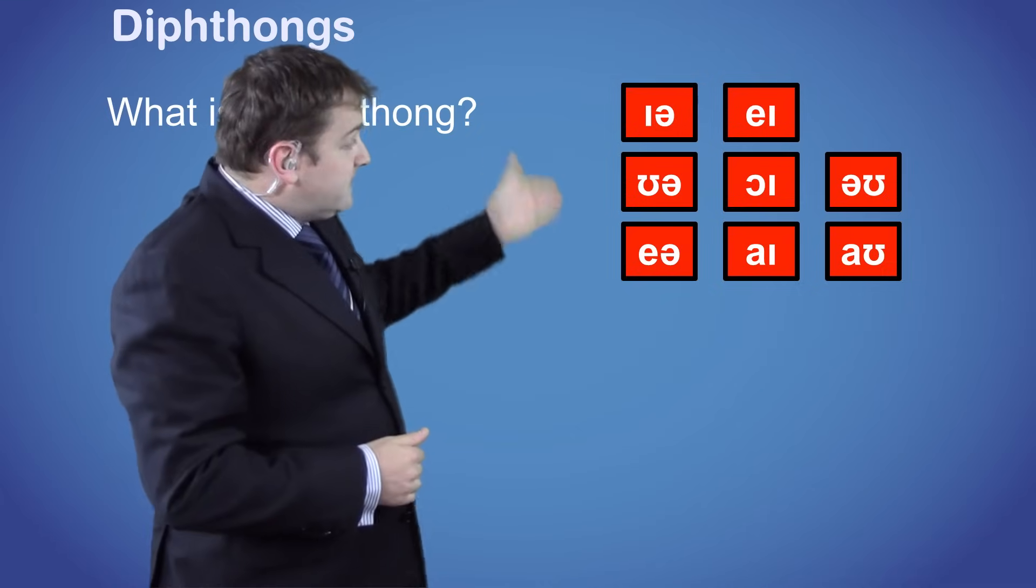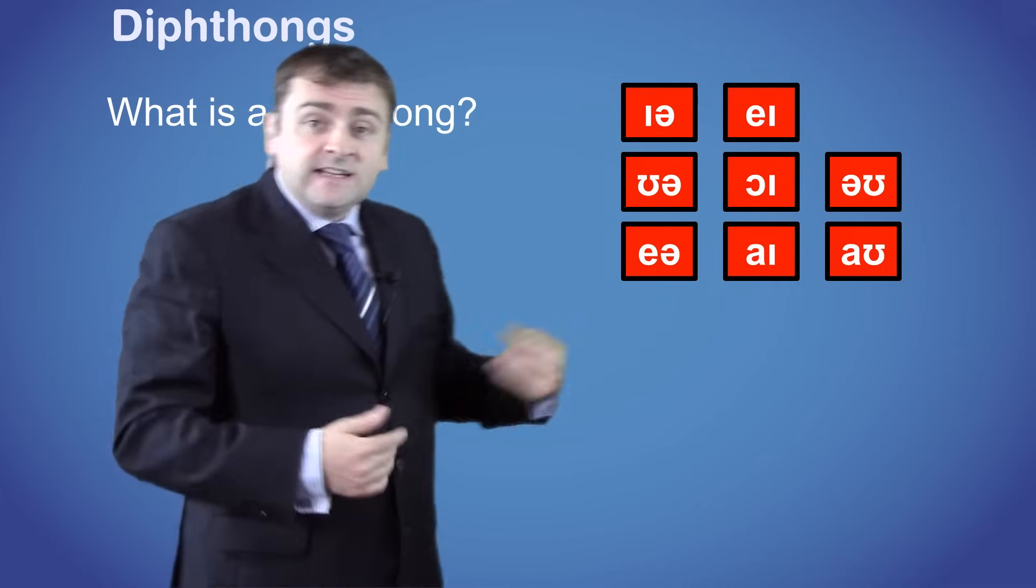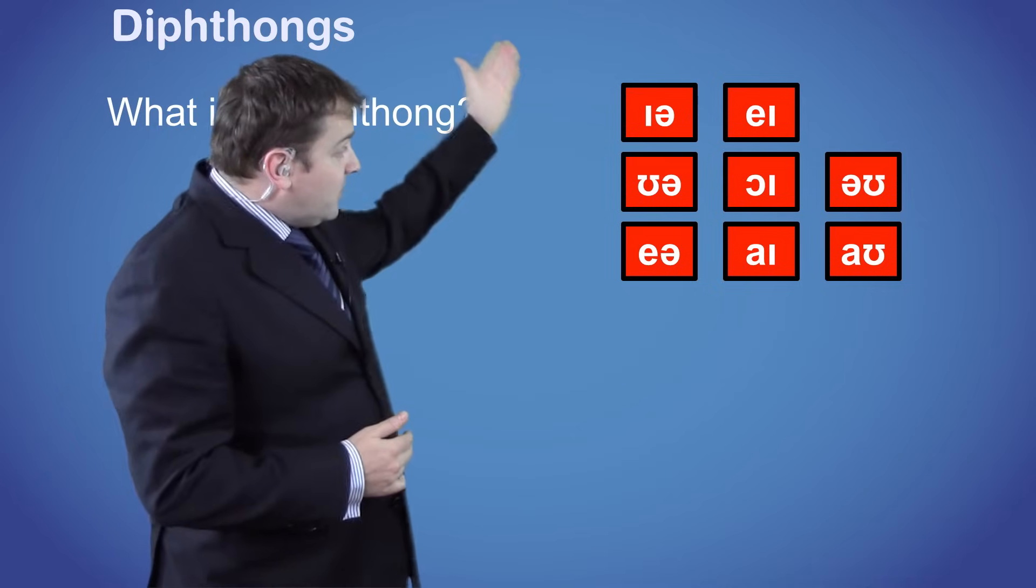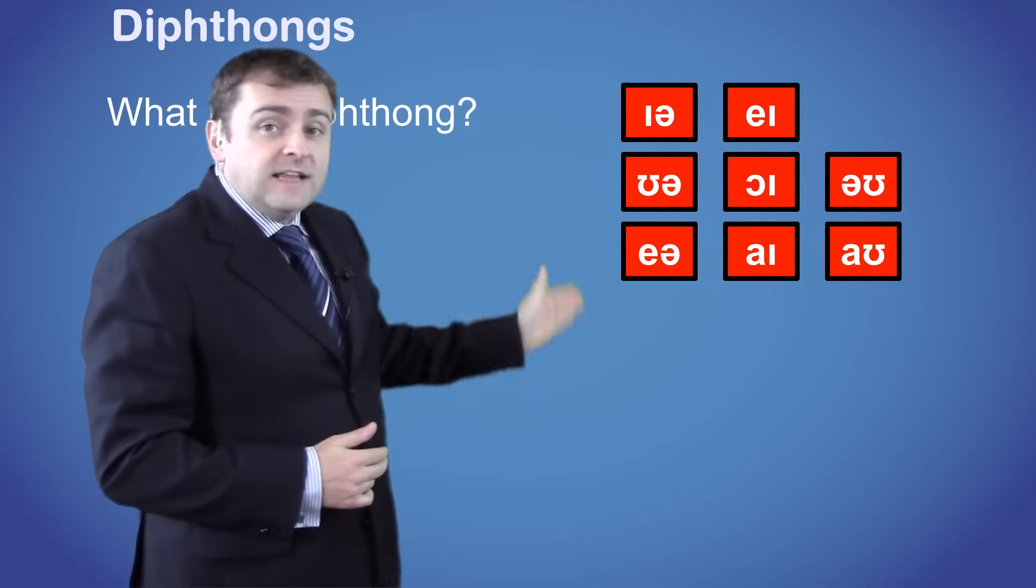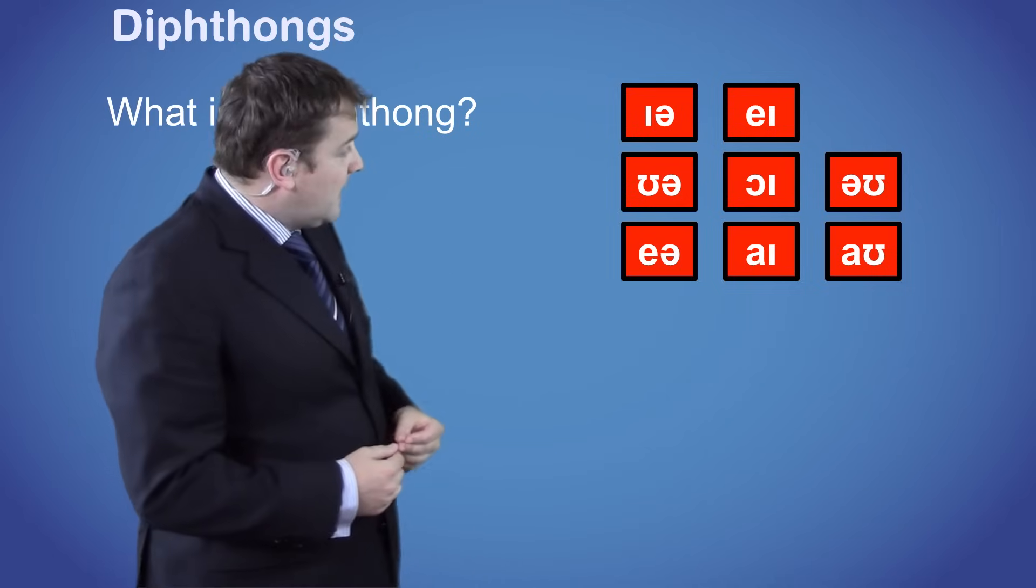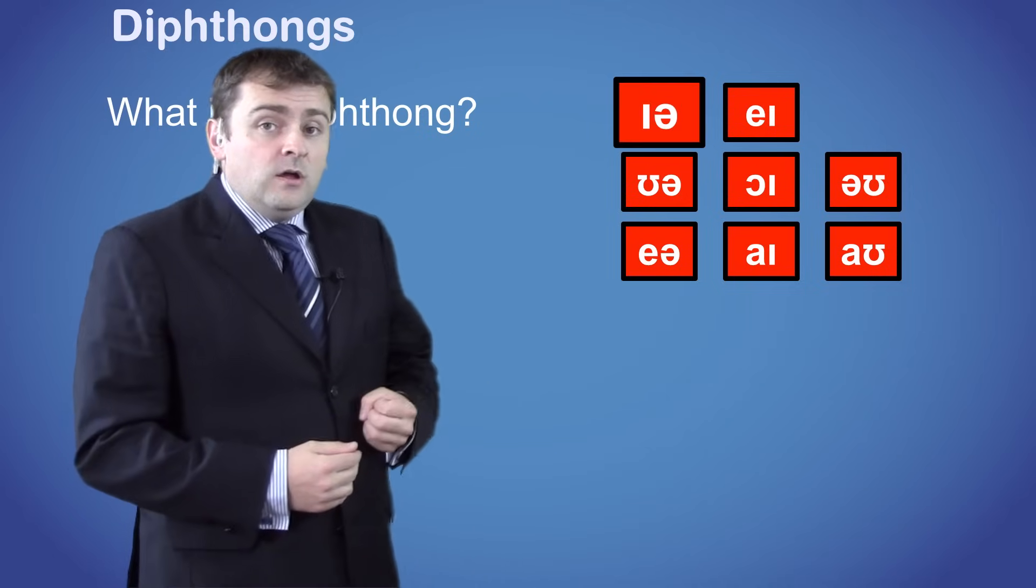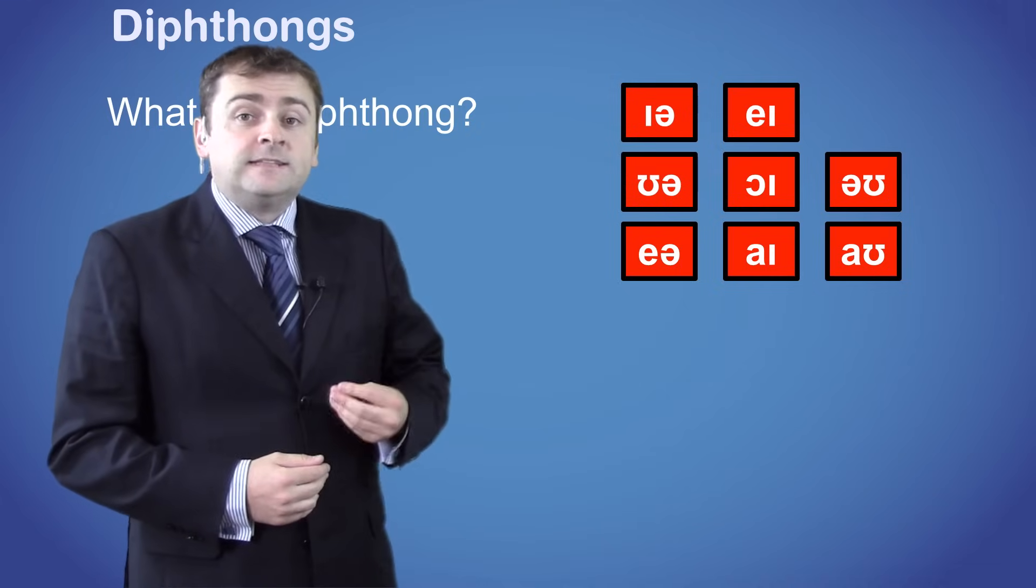Each column is arranged according to the second sound in the diphthong. In the first column, each sound ends with an uh sound. Ia, Ua and Ea.